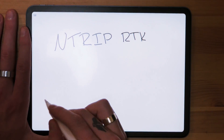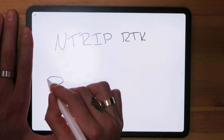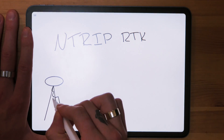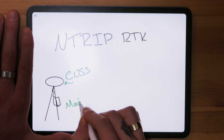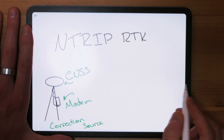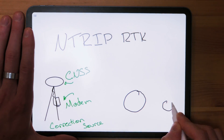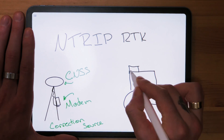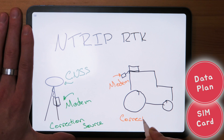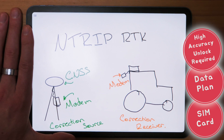Now on to NTRIP hardware. If you're running an NTRIP RTK setup, the only real difference is your transmission method. The receiver is pretty much the same, except on the transmitter side — because we're transmitting RTK via the internet, we need to connect the receiver to a modem, the same way you connect to a modem at home to access the internet. On the correction receiver side, you'll also need a modem to put your machine on the internet, plus a SIM card and data plan, and that high accuracy unlock for your receiver.